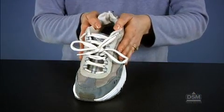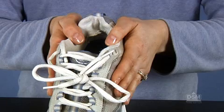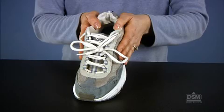Explain to the class that many objects are made out of more than one material. Hold up a sneaker and ask, what different materials is this sneaker made of? Students observe that the sneaker is made of many different materials, including leather or canvas. The sneaker may also have metal rings around the shoelace holes, and it probably has rubber soles and thread holding everything together.